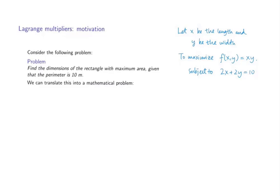We wish to maximize the function f(x,y) equals x times y. The constraint is the perimeter to be 10 meters, that is 2x plus 2y equals 10.